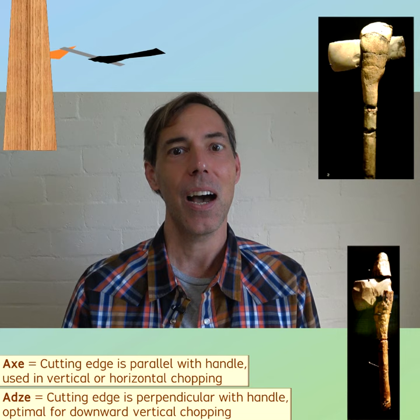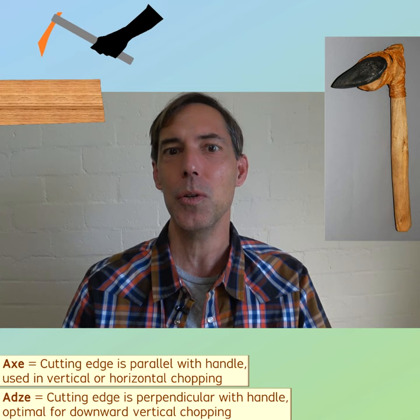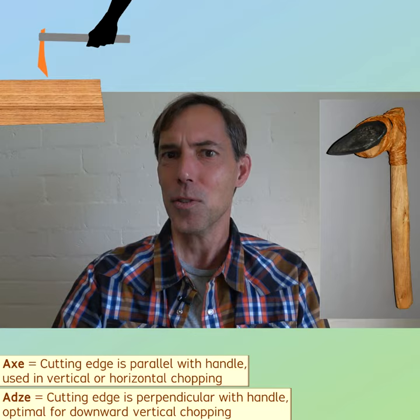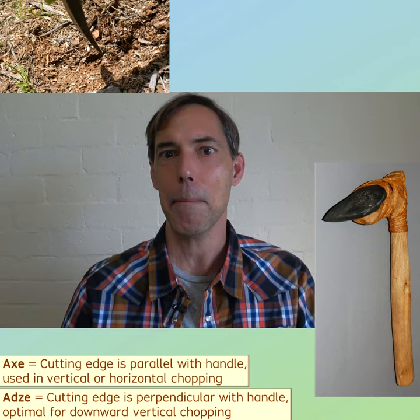The cutting action of an adze could move horizontally, but the tool's optimal use is a downward vertical strike aimed slightly back toward the user. This motion is similar to the use of a digging tool, such as a mattock or a hoe.